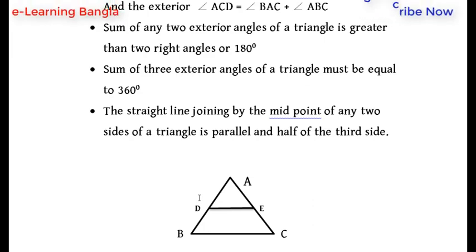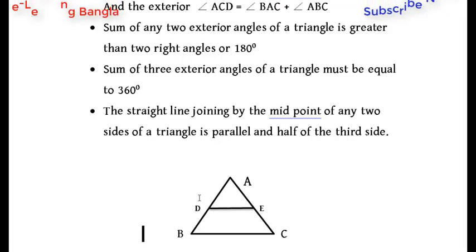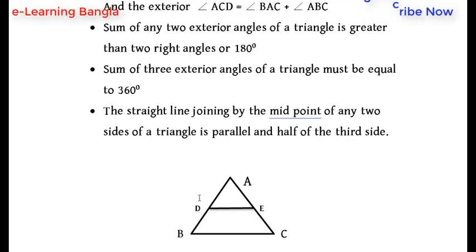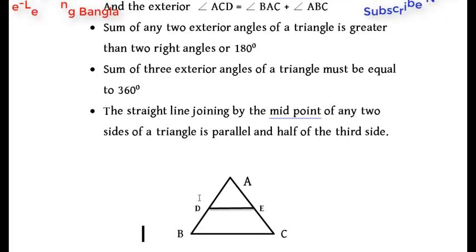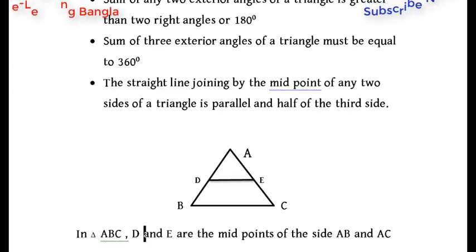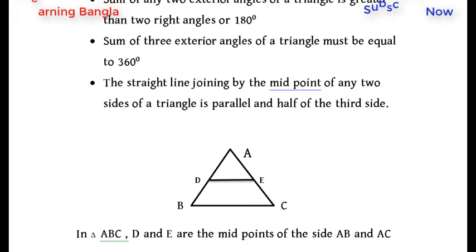The straight line joining the midpoints of any two sides of a triangle is parallel to the third side and equal to half of it. This is the midpoint theorem of a triangle.